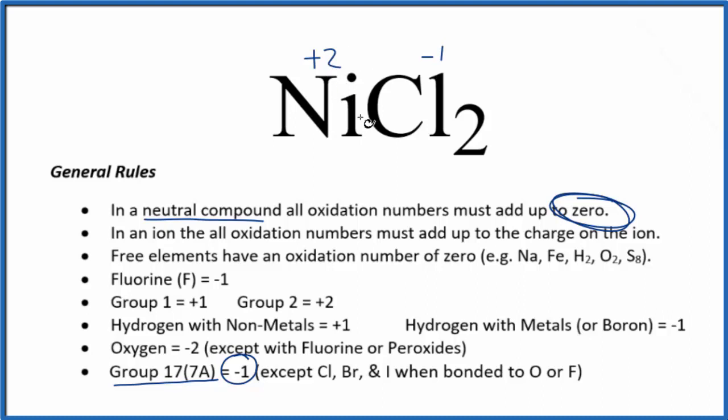That's why we call this nickel 2 chloride. We can check our work: 2 times minus 1, that's minus 2. Minus 2 and plus 2, that gives us zero.